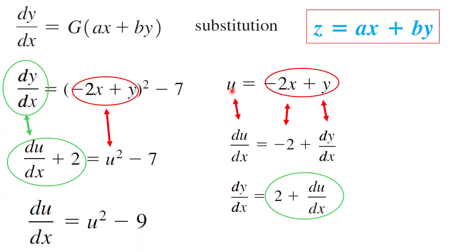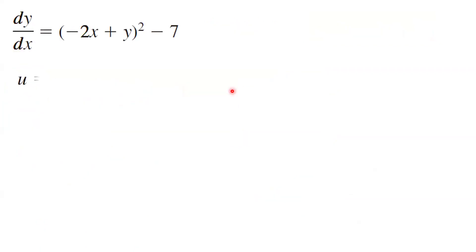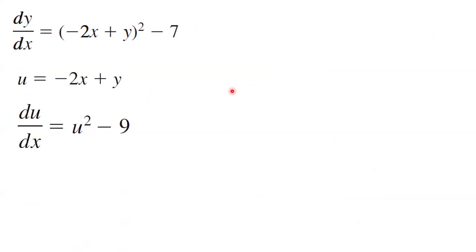This is a separable differential equation that we know how to deal with. We used u substitution and du/dx becomes u squared minus 9, so du divided by u squared minus 9 is equal to dx.